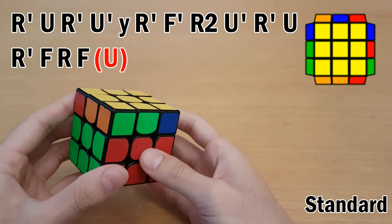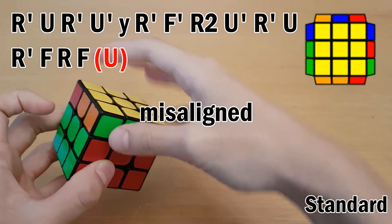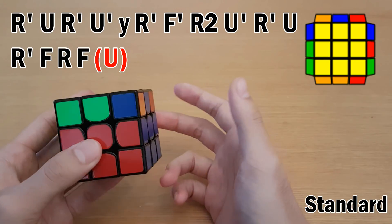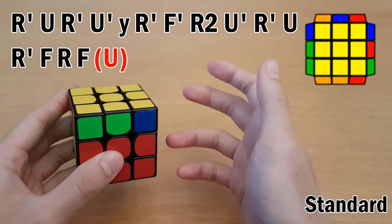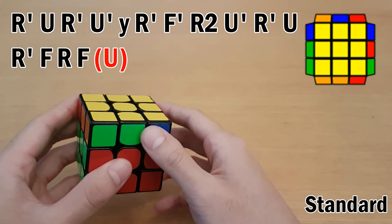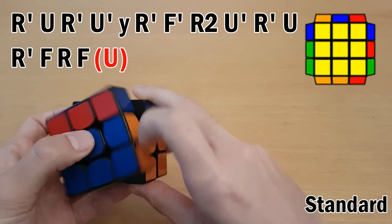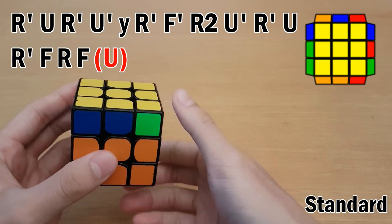Lastly, one more important thing is that if you have a U AUF at the end, which means your block is misoriented and it needs to be solved using U after the V-perm is finished, then you have to make sure you do this quickly in a way that doesn't require a re-grip. Now this applies to all your PLLs in general, but for this V-perm just make sure that you do it this way. So regular V-perm and then do it like this. So V-perm with U AUF a bit faster.